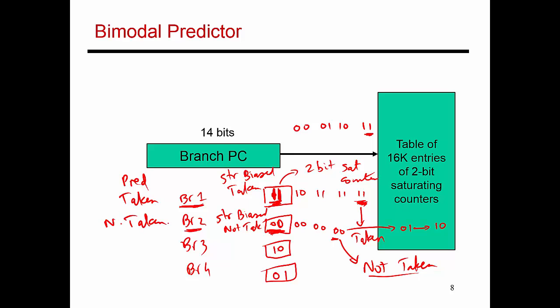Let's look at branch 3. If I look at its counter value, it has been trained to have a value of 1, 0. This is weakly biased as taken. So when I execute branch 3 next, I'm going to make a prediction that the branch will be taken. I'm just not very sure, but I'm still going to make the guess that it's taken because seemingly in the recent past this branch was taken more often than not taken.